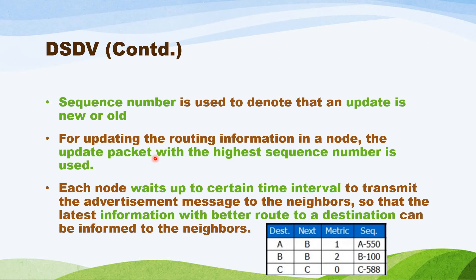The sequence number is used to denote whether an update is new or old. Whenever we receive any packet, the sequence number indicates whether it is the latest update or an old one — that is differentiated by using the sequence number. For example, if the sequence number for B is 100, and we receive an update with a sequence number greater than 100 (such as 101 or 102), we update the routing table; otherwise, we just ignore that packet.